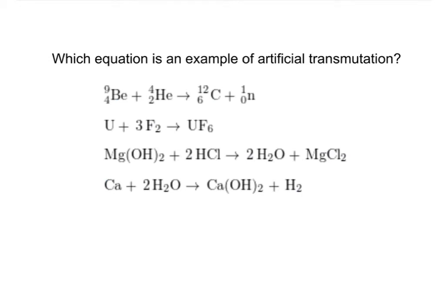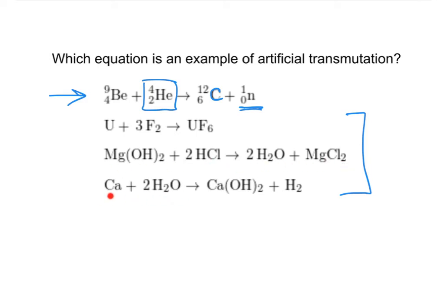Identify which equation is an example of artificial transmutation. The first equation is artificial transmutation: beryllium is attacked by an alpha particle and transmutes into carbon-12 with a neutron released. The remaining equations are chemical reactions, not nuclear — no element changes into another element, and all atoms present on the left are present on the right in the same amounts. Those are chemical rearrangements with no change to the nucleus.